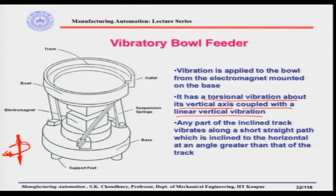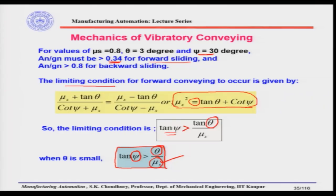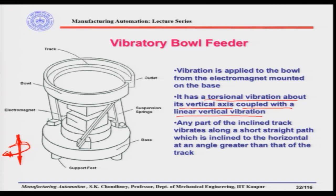The suspension springs — their angle of attachment between bowl and base, and their spring constant — along with the electromagnet selection, will be determined based on the required ψ for forward movement. The material of the parts also matters: aluminum parts, steel parts, rough or smooth surfaces will all give different values of μs, the static coefficient of friction between parts and track, which determines the required vibration angle.